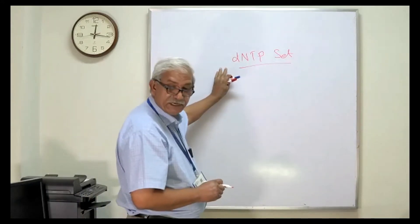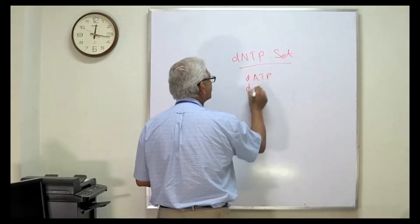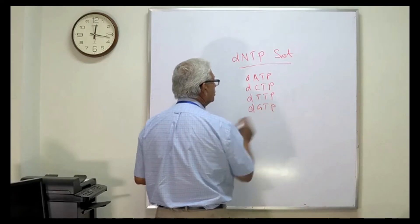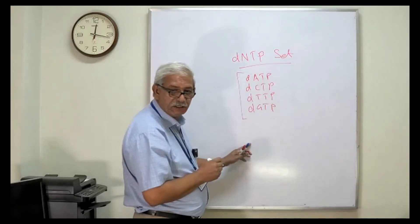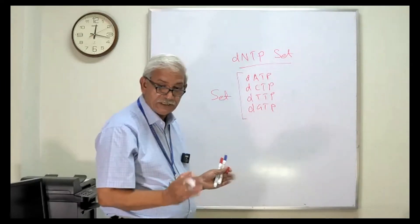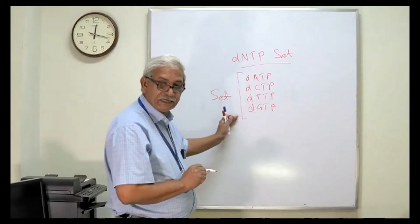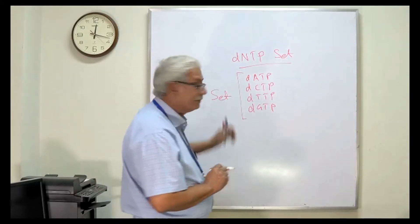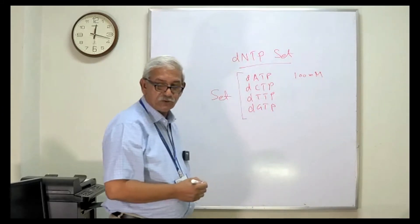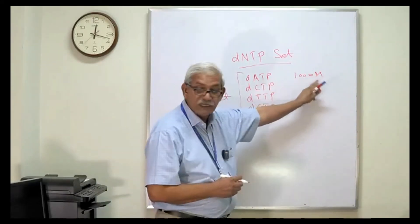We purchase a dNTP set that contains deoxy ATP, deoxy CTP, deoxy TTP, and deoxy GTP. Because there are four different nucleotides, the set has four vials. Each vial contains a different dNTP, and the concentration of these dNTPs is 100 millimolar each.